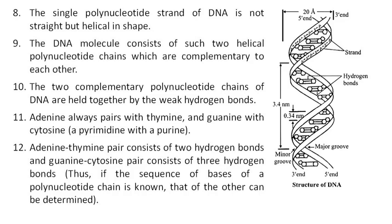The two complementary polynucleotide chains of DNA are held together by weak hydrogen bonds. Adenine always pairs with thymine, and guanine with cytosine — a pyrimidine with a purine. Adenine-thymine pair consists of two hydrogen bonds and guanine-cytosine pair consists of three hydrogen bonds. Thus, if the sequence of bases of a polynucleotide chain is known, that of the other can be determined.